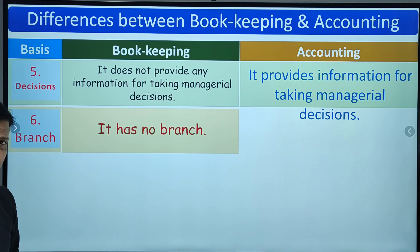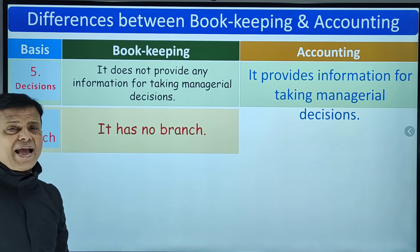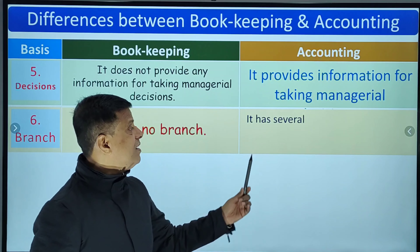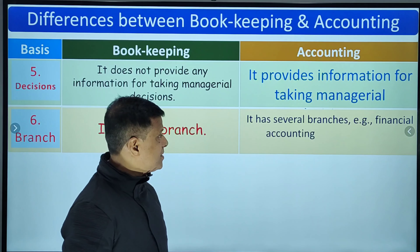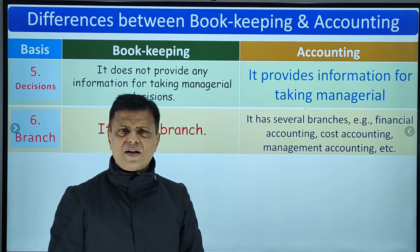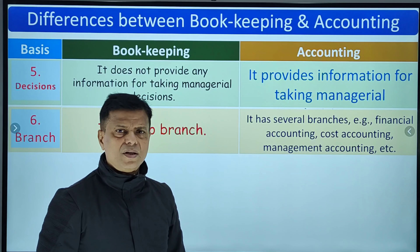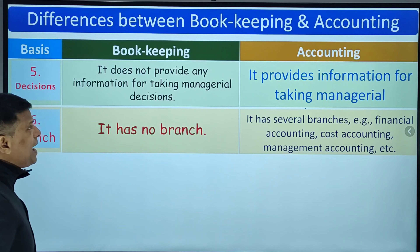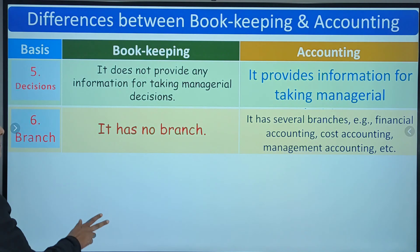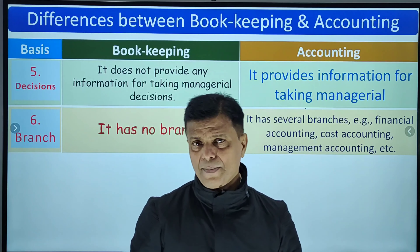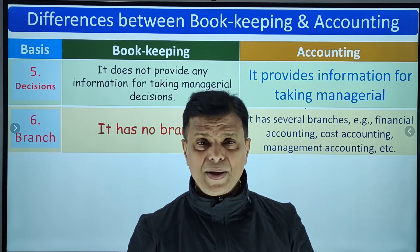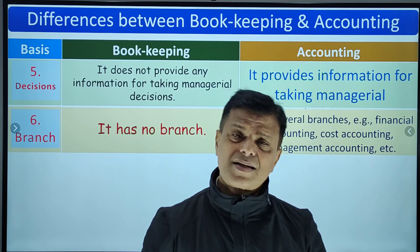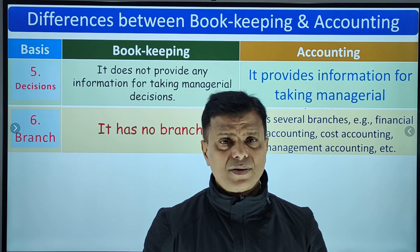Bookkeeping has no branches, whereas accounting has several branches: financial accounting, cost accounting, management accounting, government accounting, and payroll accounting. So that is the difference between bookkeeping and accounting. You may write your valuable suggestions in the comment box. Until then, thank you and see you in the next video.